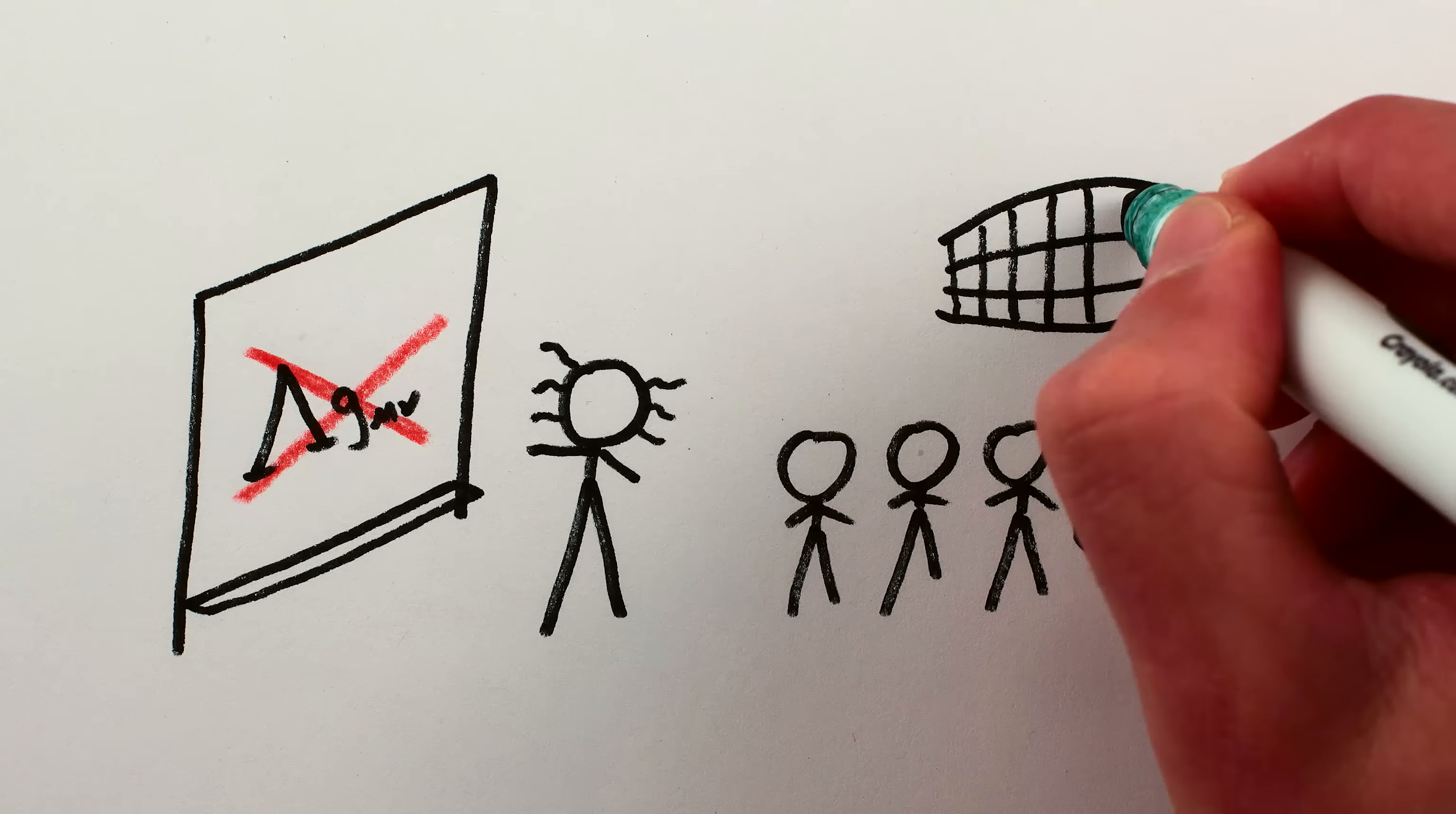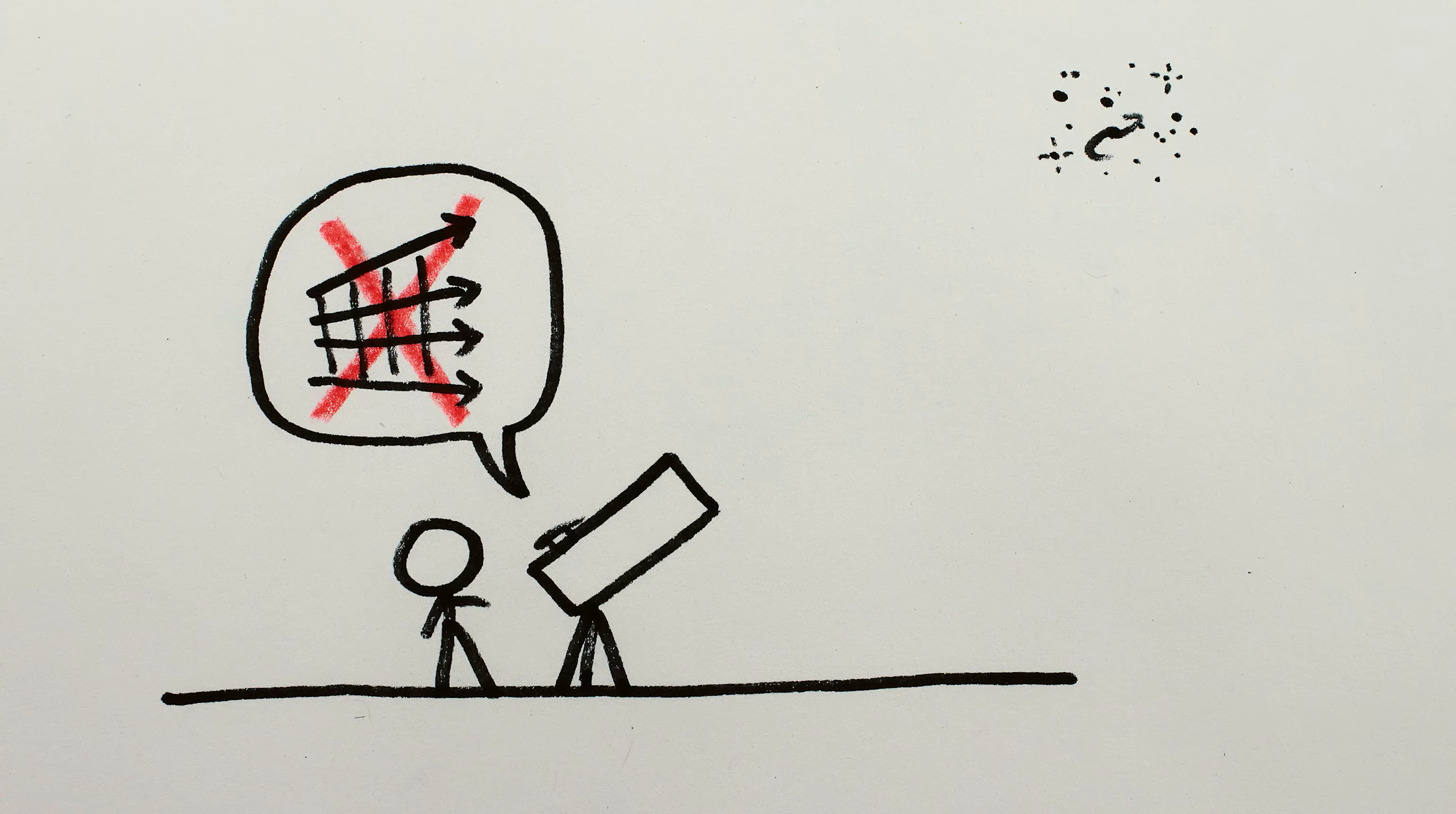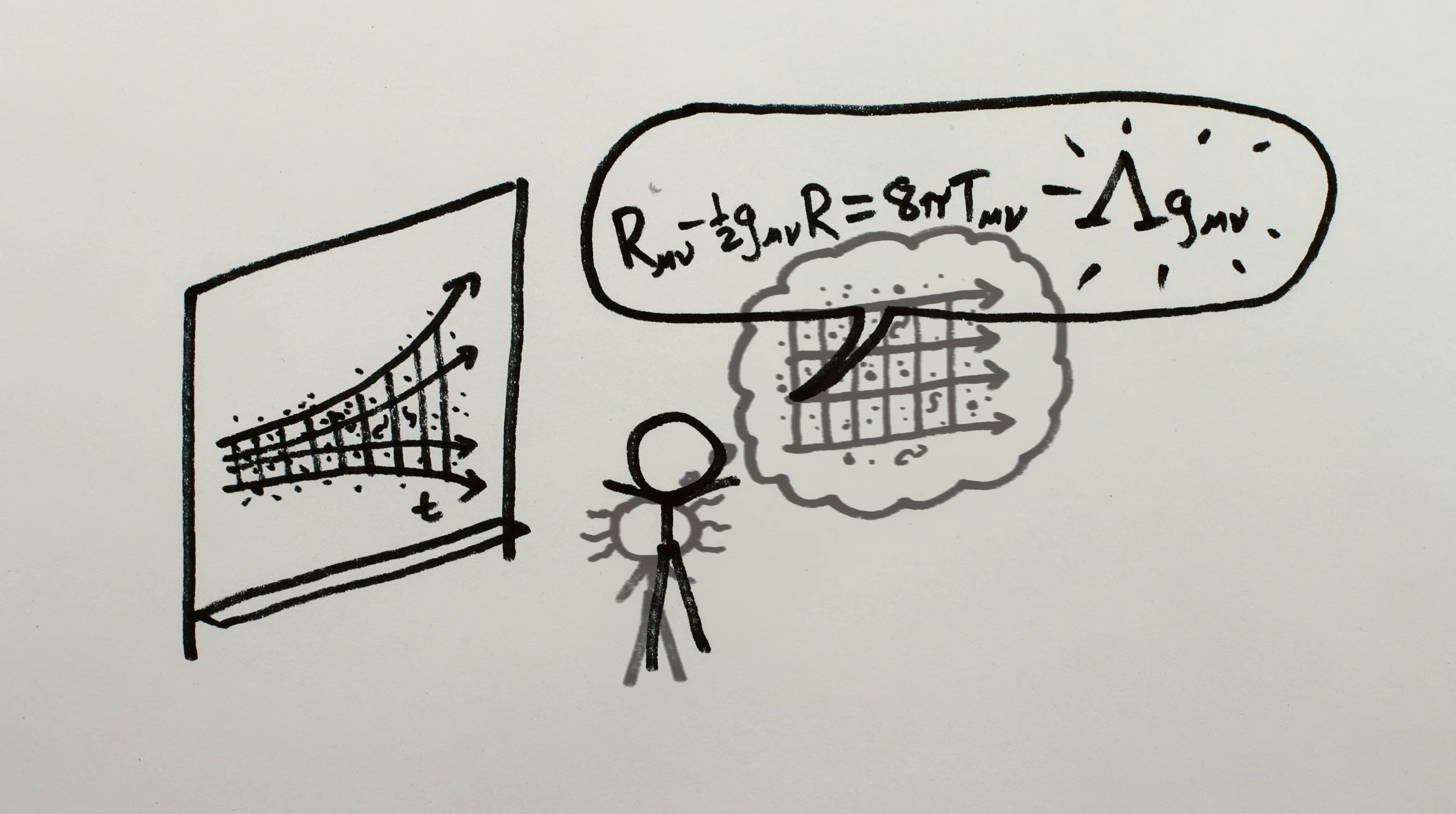However, remember how Friedman's equations predicted that the universe should be attracting itself gravitationally and so the expansion should be slowing down, unless Einstein's constant is real? Well, in 1998, decades after Einstein's death, astronomers made the surprising discovery that the universe's rate of expansion isn't constant, and it isn't slowing down. It's getting faster. And so, in a great ironic twist, Einstein's constant does ultimately have a role in describing the universe. Though it turns out to be a very different universe from what he'd imagined.